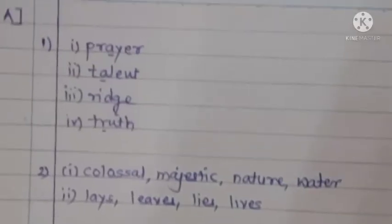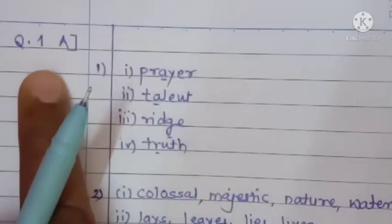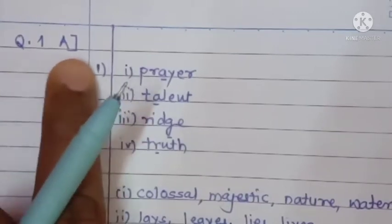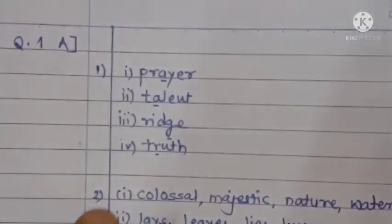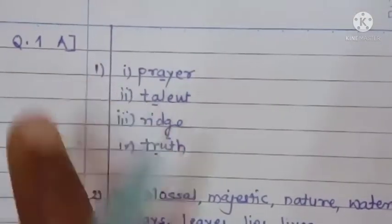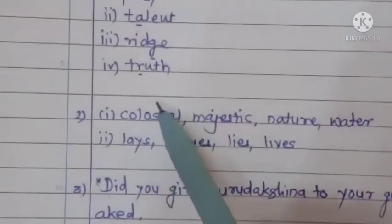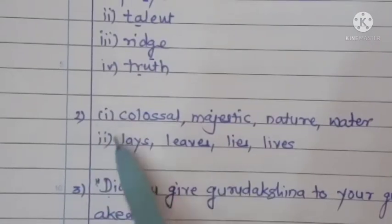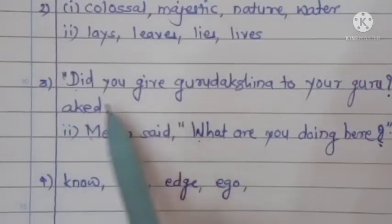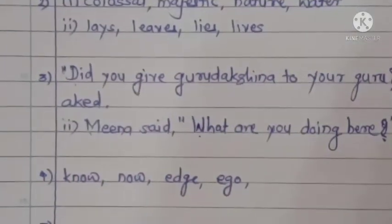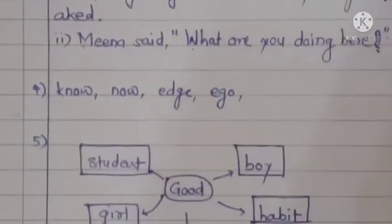When you begin your answer sheet, write question number 1A. Then write the answer of the first activity, leaving a line, then second activity — first set, second set — leaving a line, then third activity: punctuate the following sentences with answers, leaving a line, then fourth activity with four words, and then moving to fifth activity.